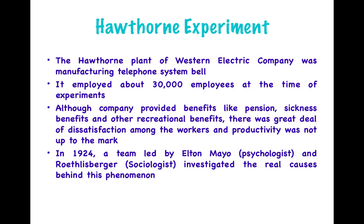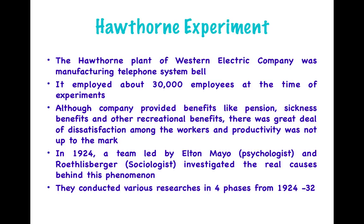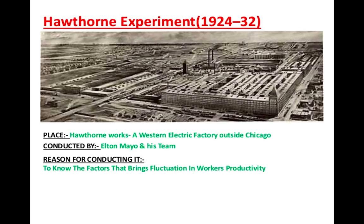In 1924, a team led by Elton Mayo, a psychologist, and Roethlisberger, a sociologist, investigated the real causes behind this phenomenon. They conducted various researches in four phases from 1924 to 1932 — a period of eight years. The Hawthorne plant was situated outside Chicago, and the reason for conducting these experiments was to find out what factors cause fluctuations in worker productivity.